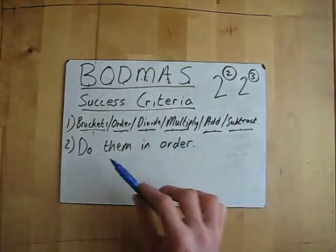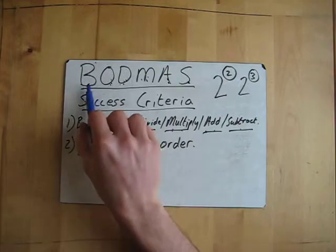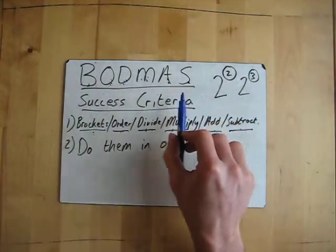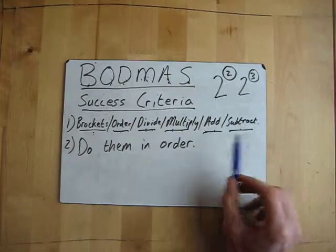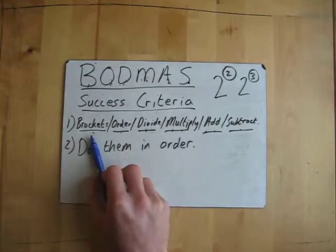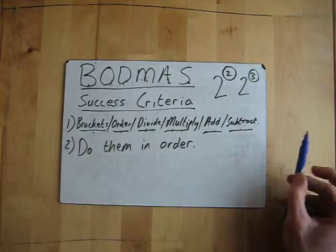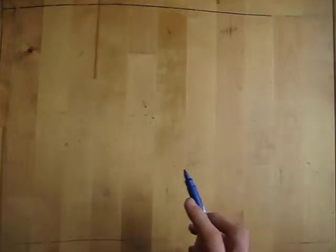And basically what you have to do is when you see an equation, you have to do them in order that you see the different things. So whenever you see brackets you must do it first and then work your way down the scale. Okay, so the best thing to do is show you a couple of examples.